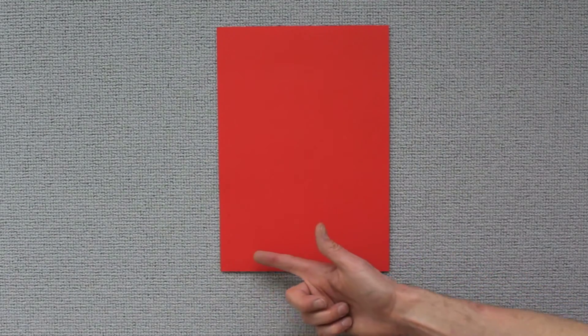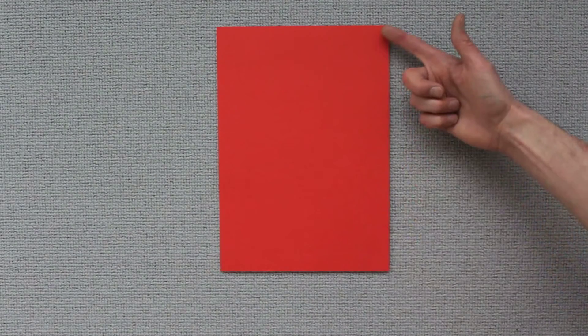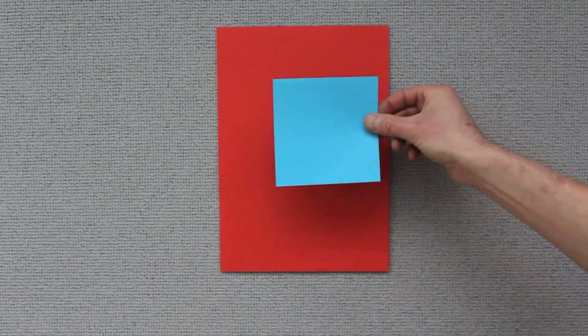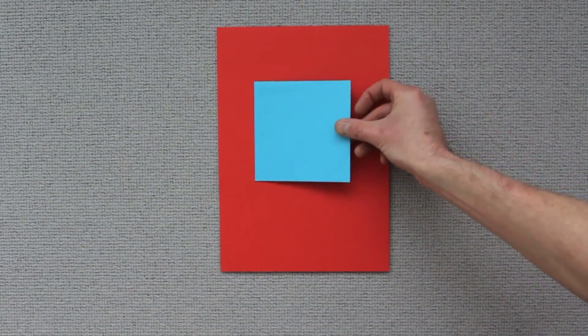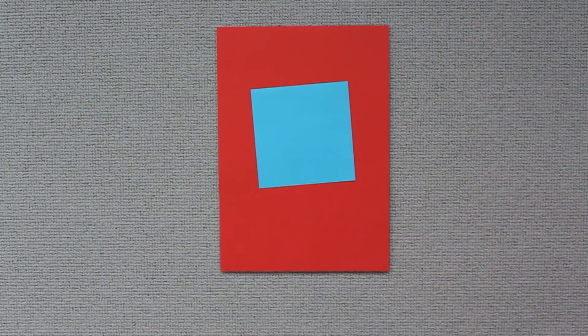A regular piece of paper has a different relationship between width and height, whereas a square has an equal relationship — equal proportion.